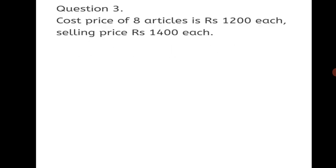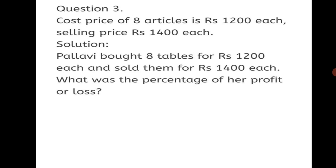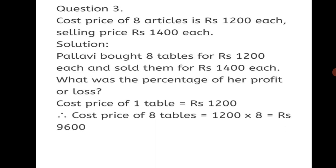Question 3: Cost price of 8 articles is Rs.1200 each. Selling price Rs.1400 each. When we multiply each price by 8, we get the total cost price and total selling price. Let's frame the word problem first. Pallavi bought 8 tables for Rs.1200 each and sold them for Rs.1400 each. What was the percentage of profit or loss? We don't know if it's profit or loss, so we put that in the question itself. Cost price of 1 table = Rs.1200. Therefore cost price of 8 tables = Rs.1200 multiplied by 8 = Rs.9600.